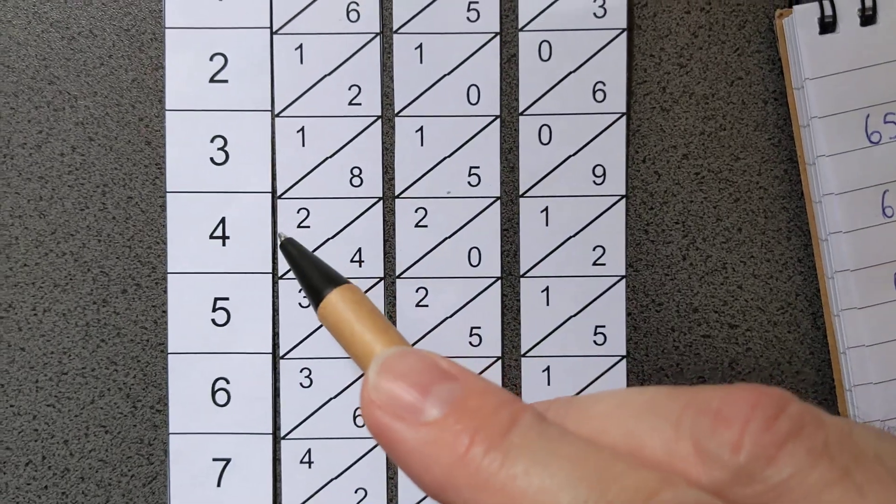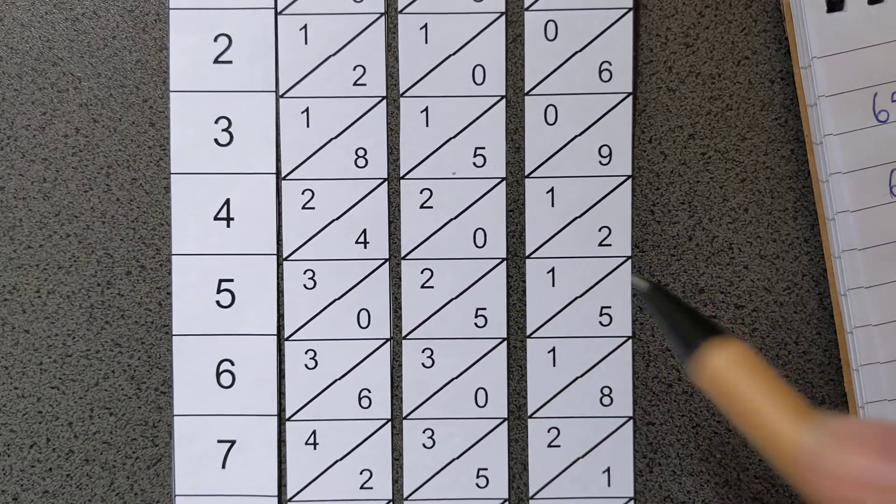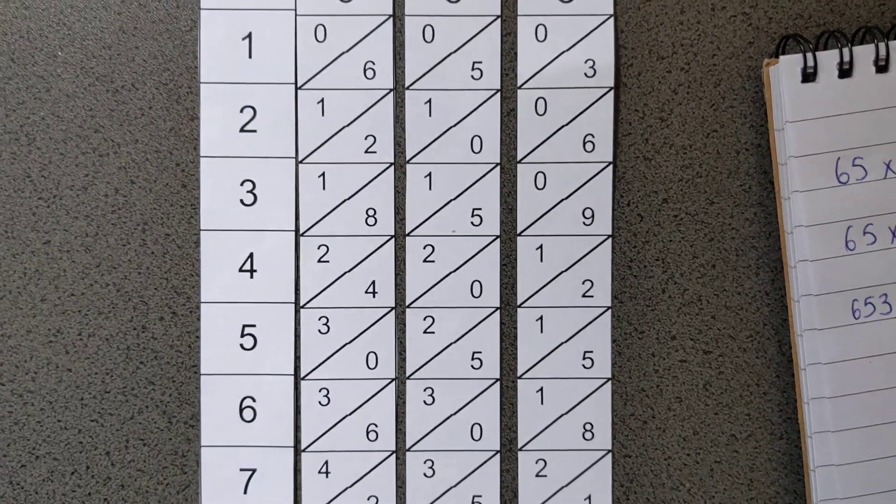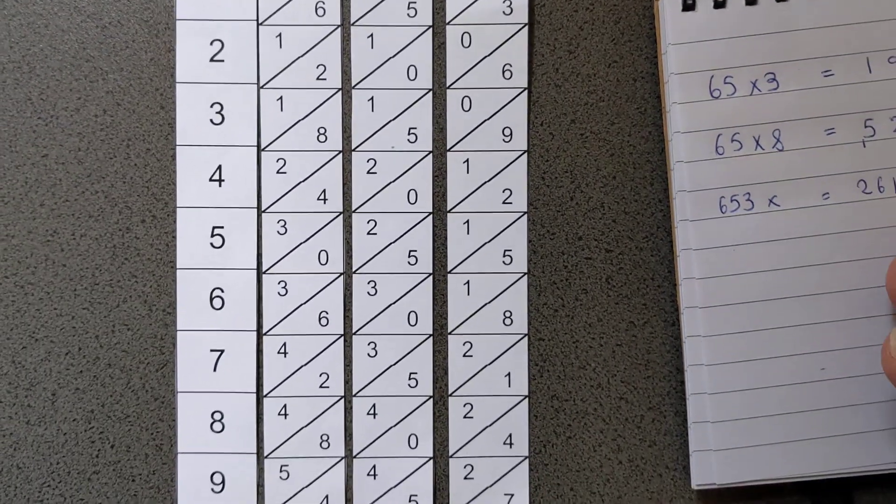So I would have, it would be 2, then it would be 6, and then it would be 1, and then it would be 2. So 2, 6, 1, 2. So I can start from the left if I can see that there's no carrying required.